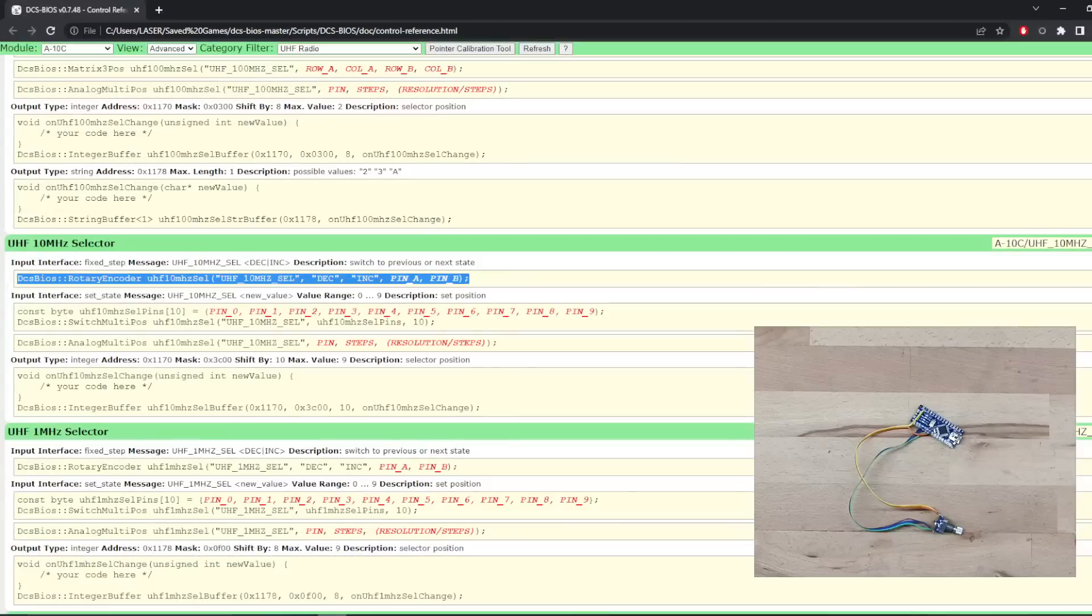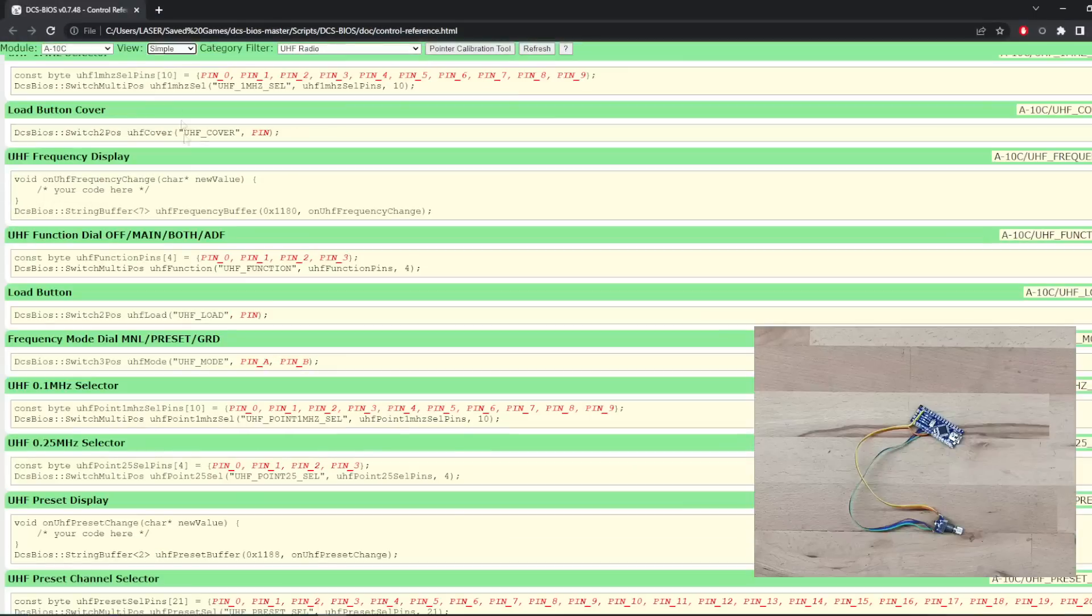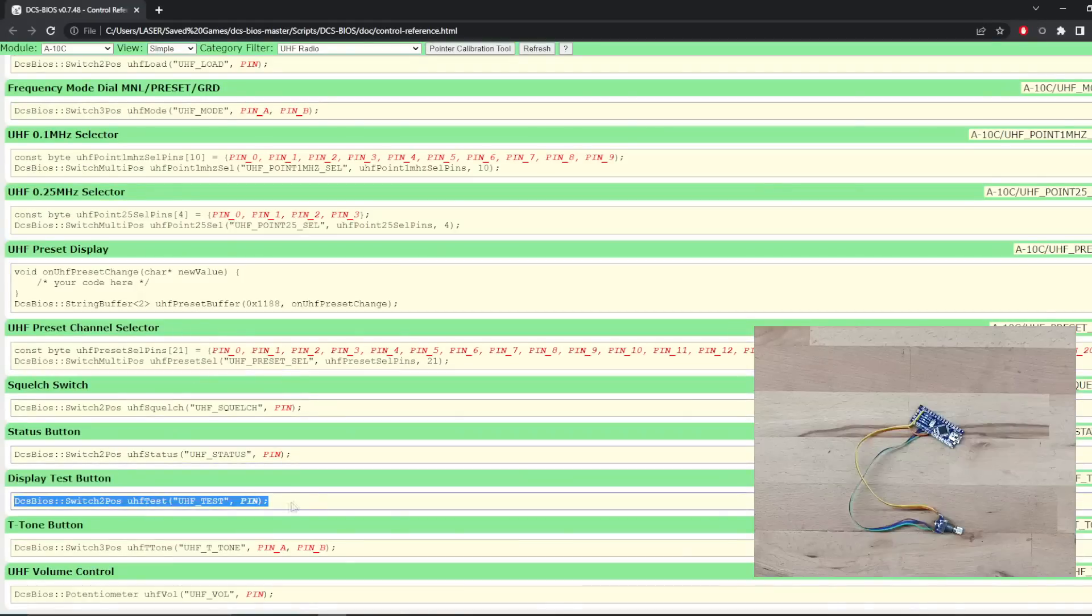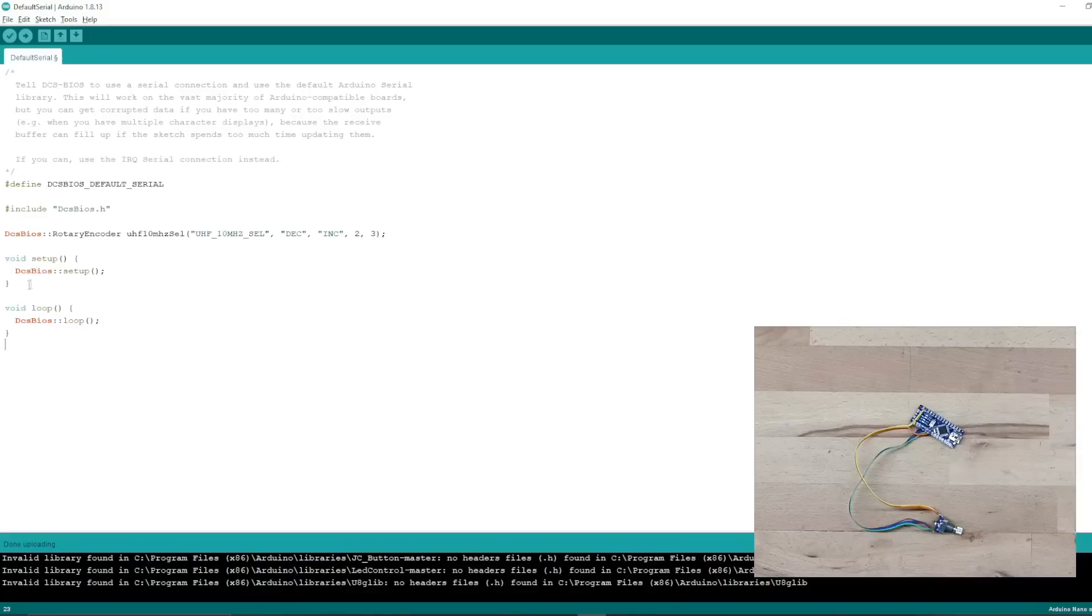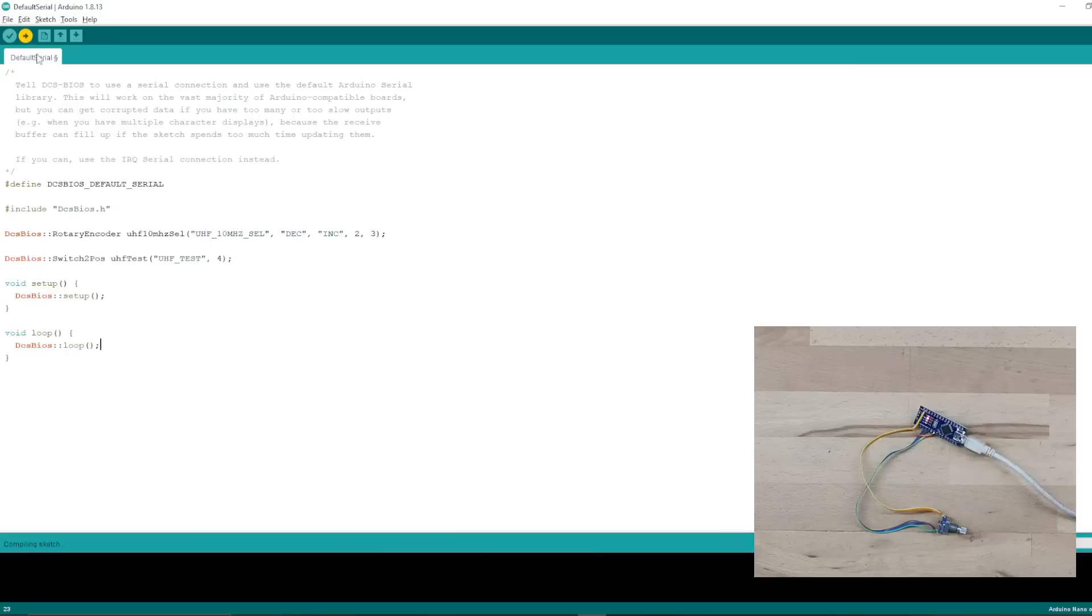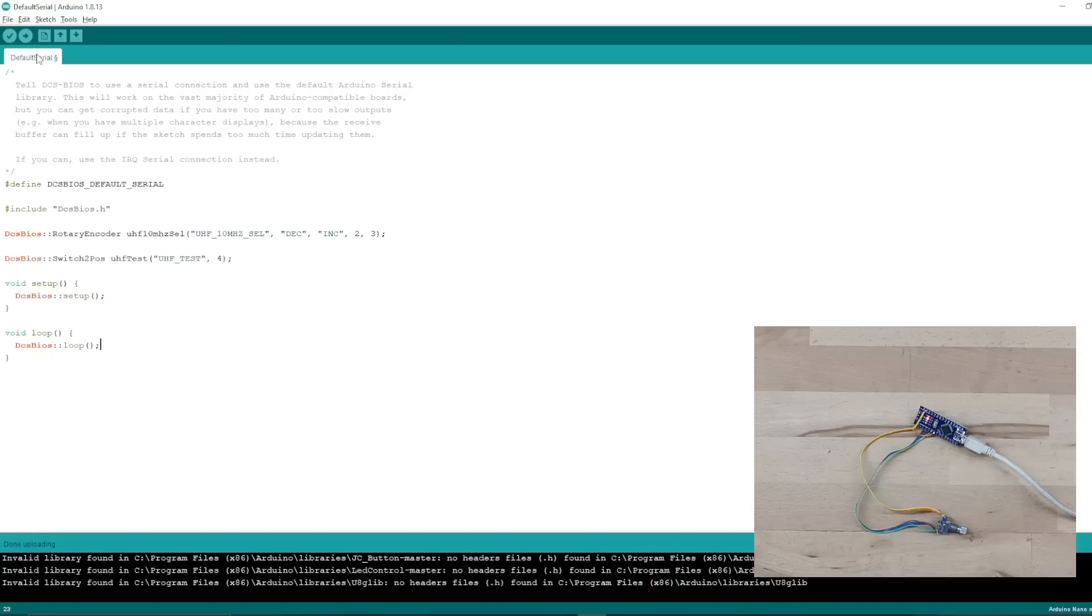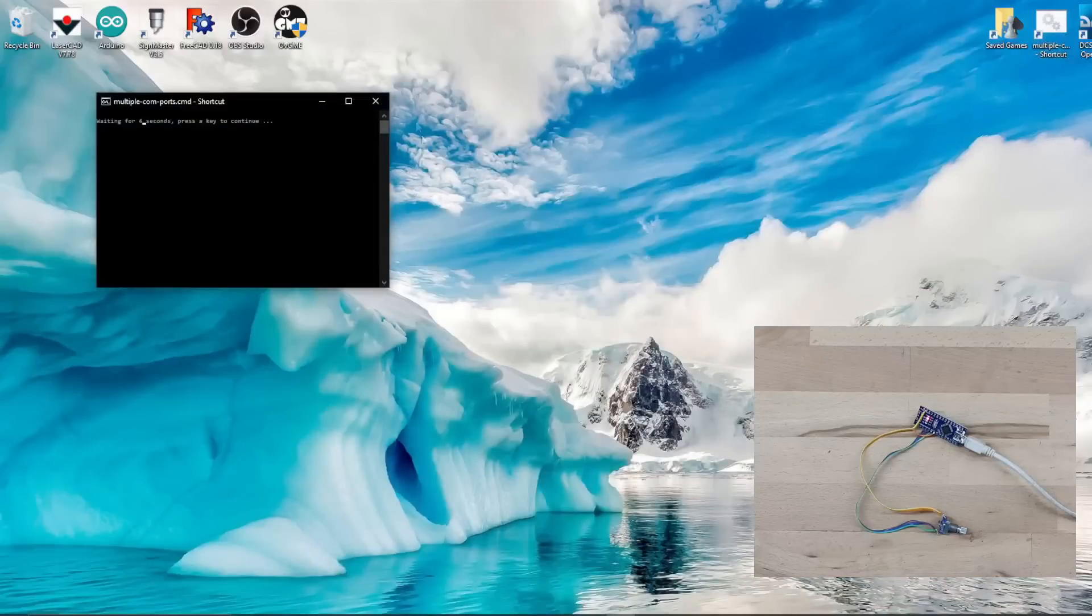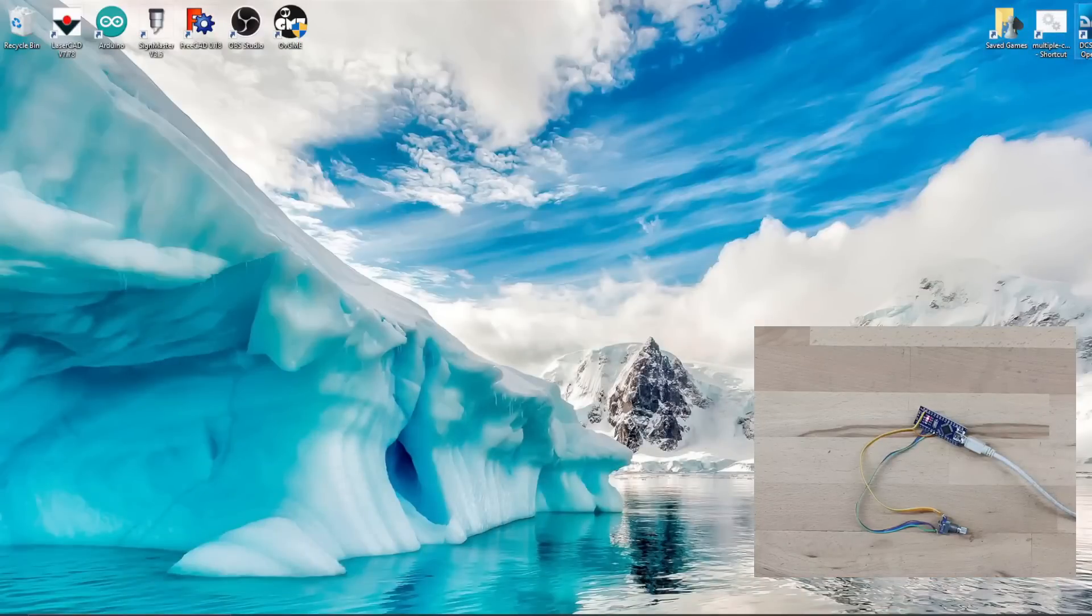Now the push button switch we'll grab something else for. Just go back to simple. The display test button will do us, so we'll select the display test button and we'll copy that into here and we'll make that pin number 4. Yep, so now we will just connect it to the computer. Upload that to the board. Done. Now we'll minimize this and we will fire up DCS BIOS, the command prompt. Minimize that and we'll open up DCS World.